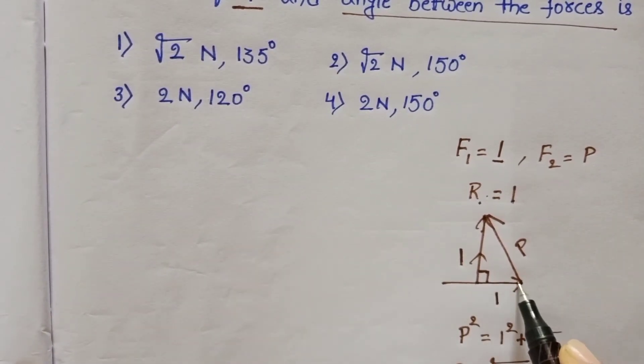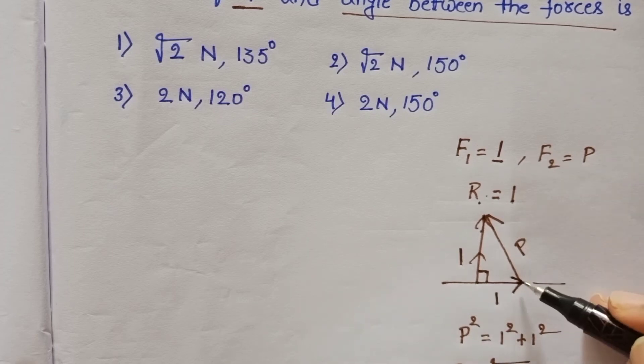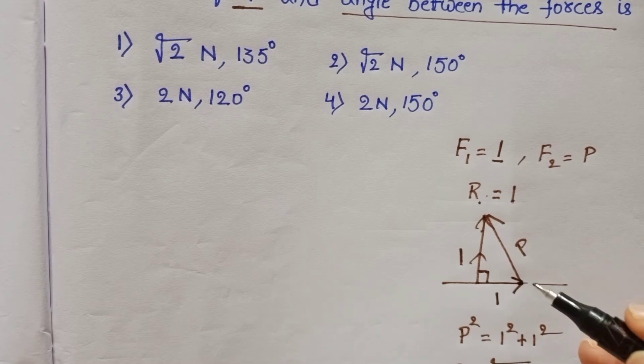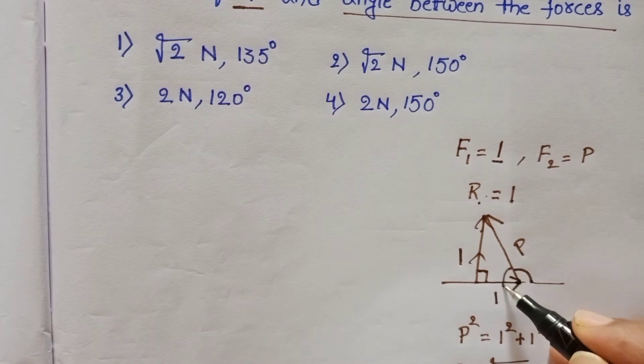This vector acting along this direction, head part, and this is tail part. So angle between these two vectors is the exterior angle. Let this angle be theta.